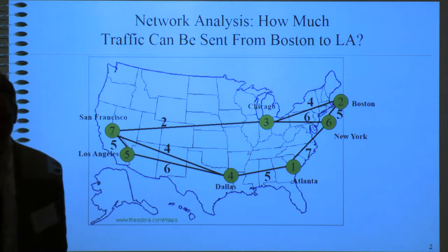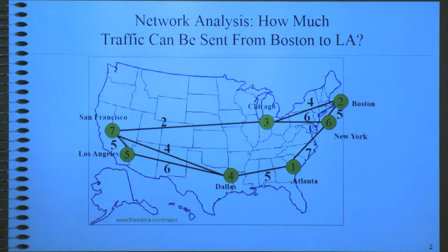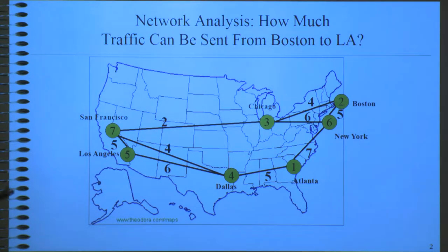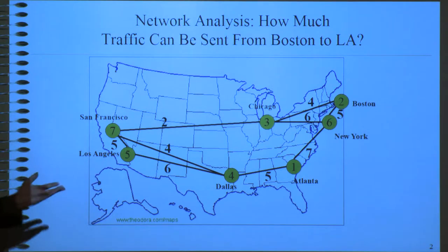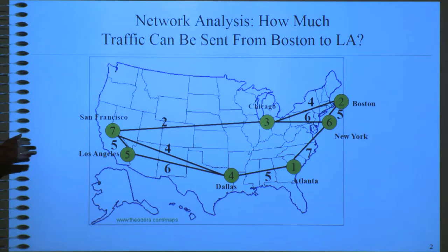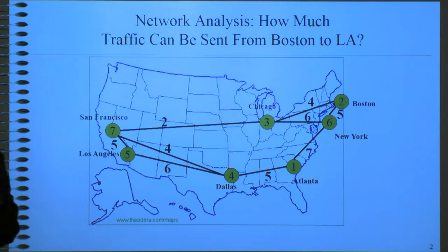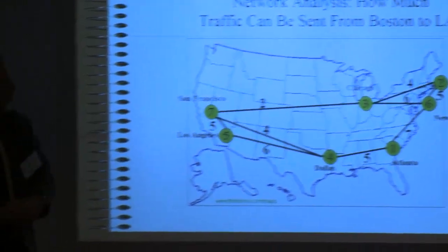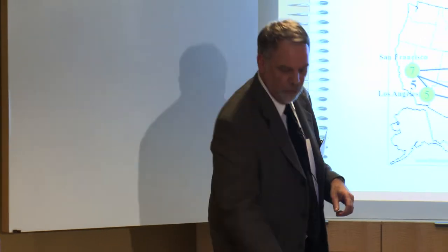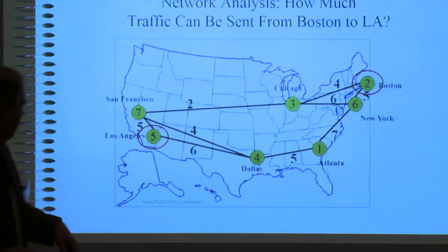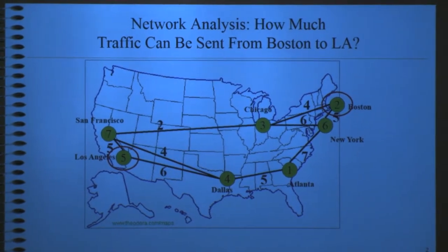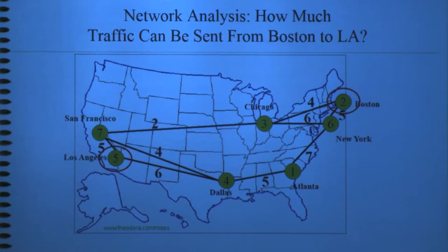I need to spend just one minute talking about network engineering to set this up. This is a typical example of a network analysis question that a telecom engineer might be interested in. We have a network with an organization that's got facilities in seven cities in the U.S., and the numbers on the links are bandwidth units — they could be gigabits per second.